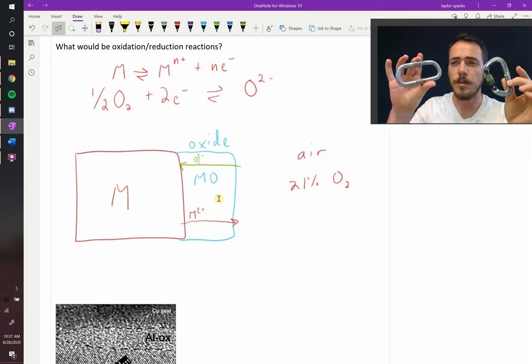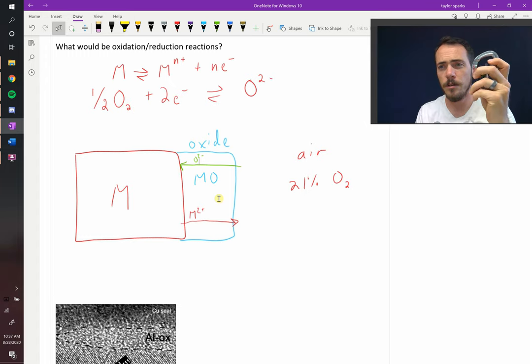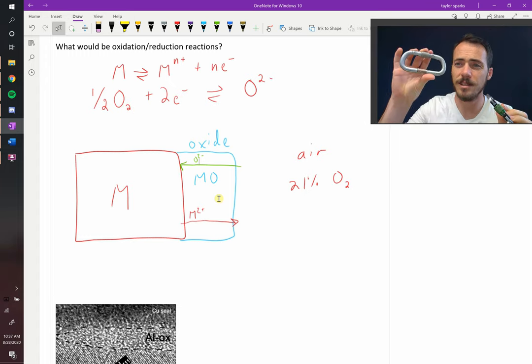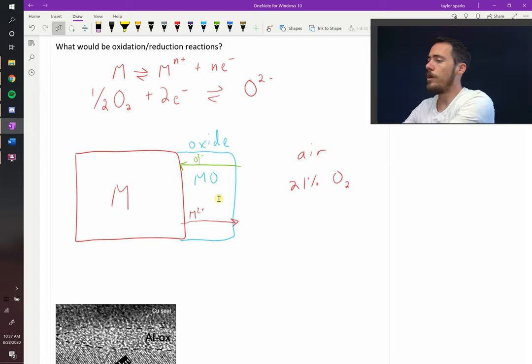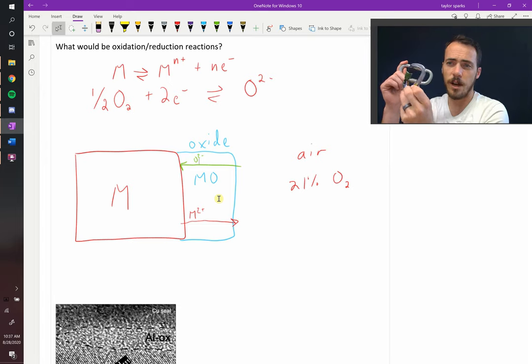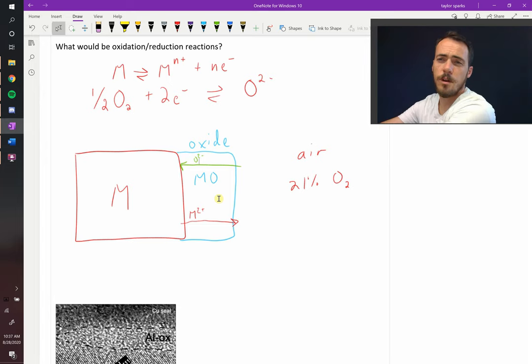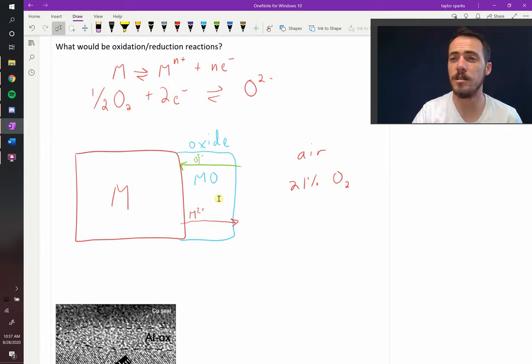For example, considering this climbing gear, you've got an aluminum carabiner and you've got a stainless steel carabiner. Now these don't look like oxides, which are ceramics, these look like metals, and yet oxides have grown on these. What you have is stainless steel and aluminum. Both of these form what are called passivating oxide layers.